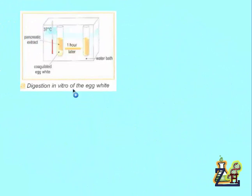The first experiment was done with a tube containing coagulated egg white. Pancreatic extract was added to it at 37 degrees Celsius in a water bath. One hour later, we noticed that the coagulated egg white was transformed or disappeared.